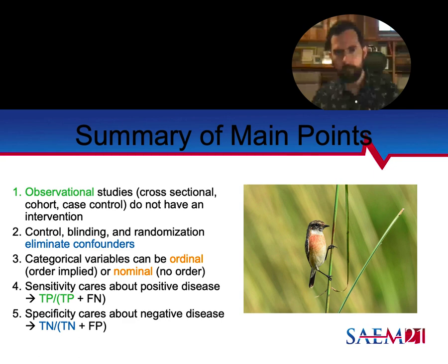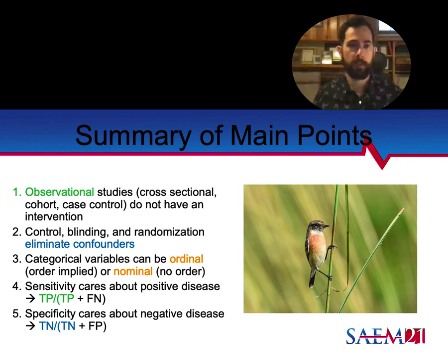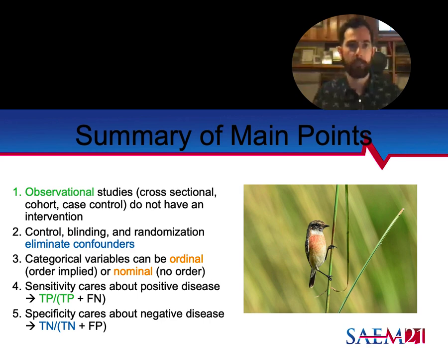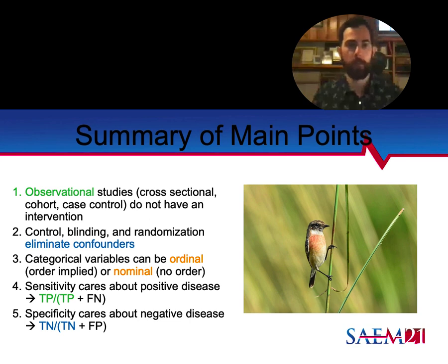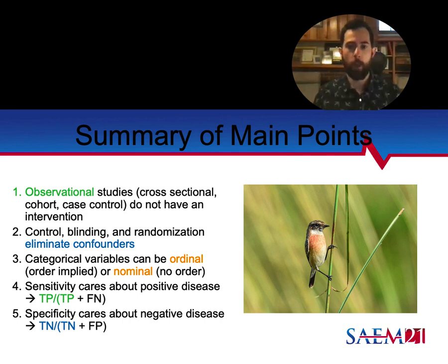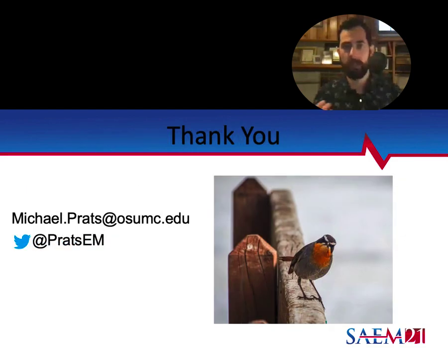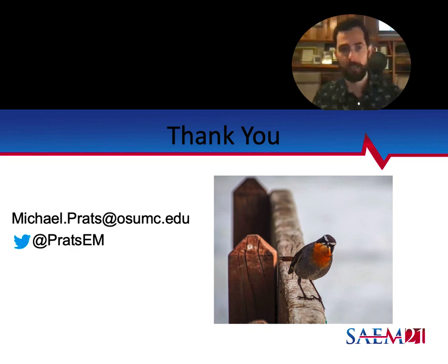Let's summarize: observational studies — cross-sectional, cohort, case-control — involve no intervention. Control, blinding, and randomization help establish causality by eliminating confounders in clinical trials. Categorical variables can be ordinal (with order) or nominal (without order). Sensitivity cares about positive disease; specificity cares about negative disease. Hopefully you gained something from this talk — and hopefully you learned that chats are birds. Thanks for joining me for 'Chats and Stats with Prats.' Feel free to email with any questions.